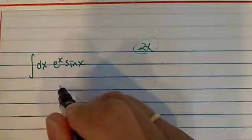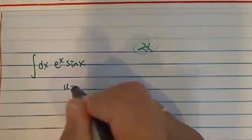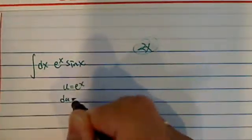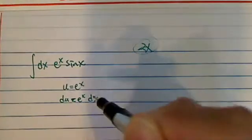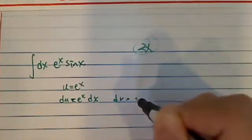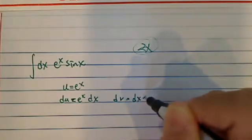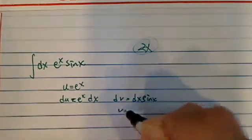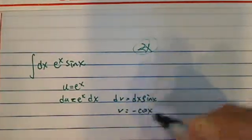So let's start with the first one. Let's have u equal to e^x, then du equal to e^x dx. dv here is sine of x dx, so v is equal to minus cosine of x.